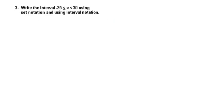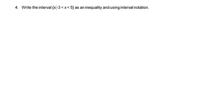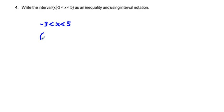Next, we're going to go to number four. Write the interval — x such that x is between negative three and five — as the inequality and the interval notation. Inequality notation: we can just piece this out of the set notation. So inequality notation is simply negative three is less than x, and x is less than five. That is our inequality notation. For interval notation, since we have strict less-than on both sides, we use parentheses: (-3, 5).